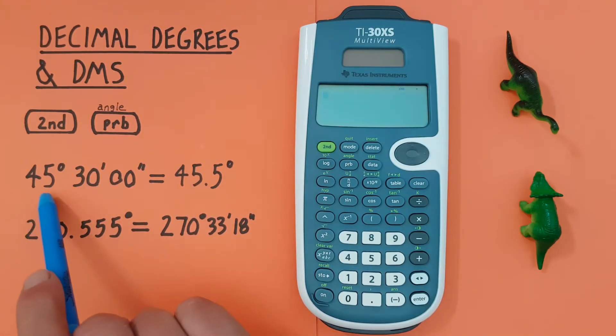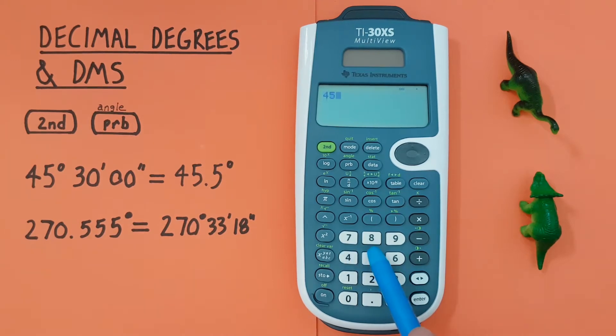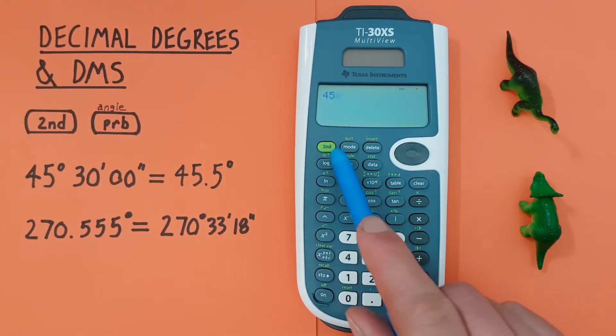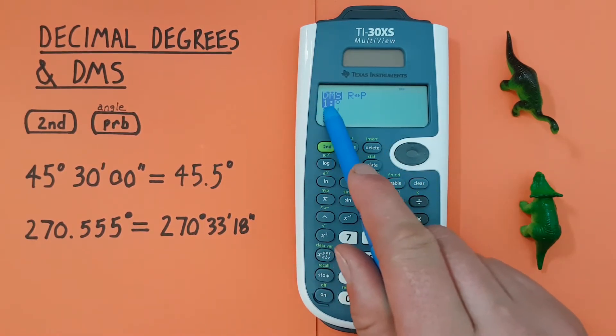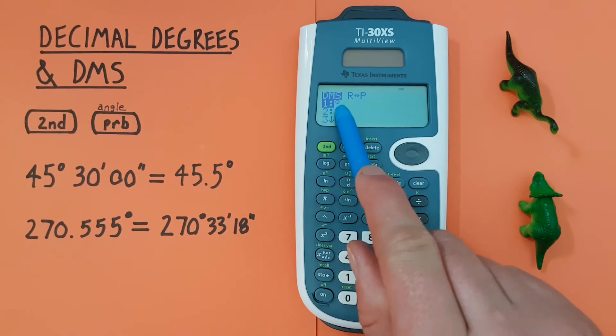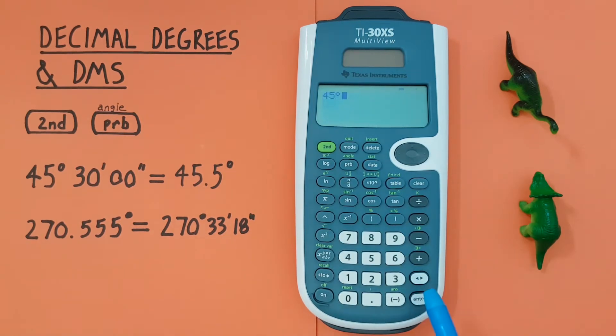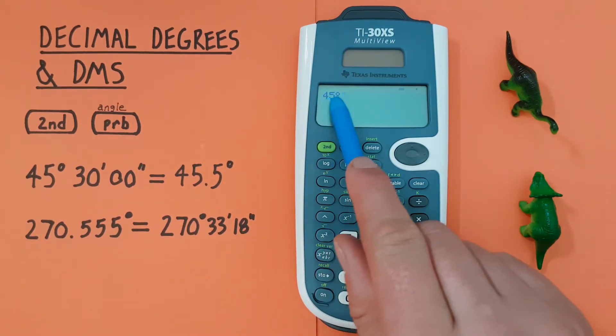Let's say we were given 45 degrees, 30 minutes, zero seconds and we wanted to enter that on our calculator. Well we could do that by pressing 45 and then second function and then the PRB key to bring up this menu here and we see the first option that's highlighted, number one there, is the degree symbol. So we press enter and we now have 45 degrees.